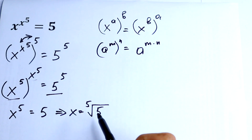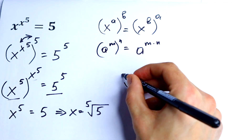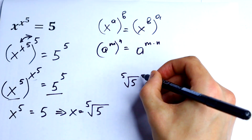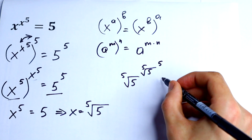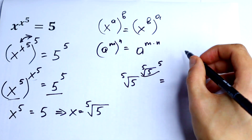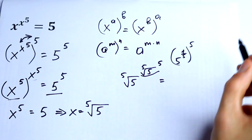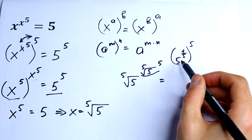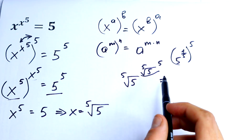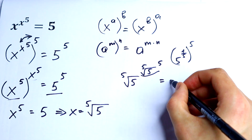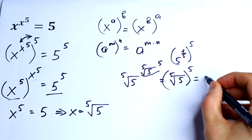Let's check our answer. We would have the 5th root of 5 to the power of the 5th root of 5, all raised to the 5th power, equal to 5. We can write 5th root of 5 as 5 to the 1/5 power, then raise that to the 5th power. Multiplying the exponents gives 5 to the 1st power, equal to 5 — confirmed.